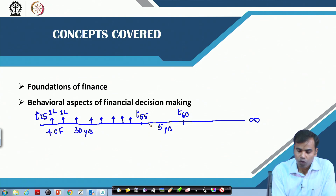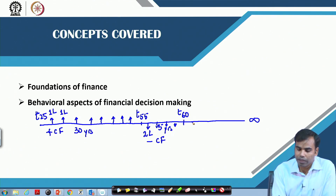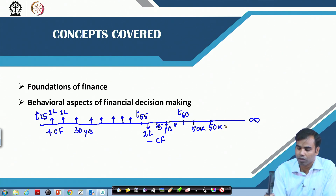For the next 5 years you expect to spend 2 lakh per year — this is a negative cash flow. And at the age of 60 you want to retire and settle down in a monastery, so every year you need 50,000. Living in a monastery will not require a lot of money, so you can manage with 50,000 per annum in expenses, and that will continue till infinity.